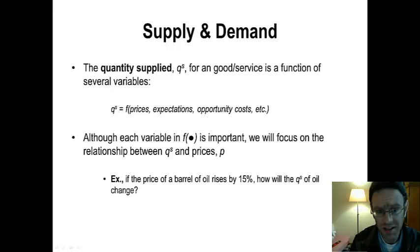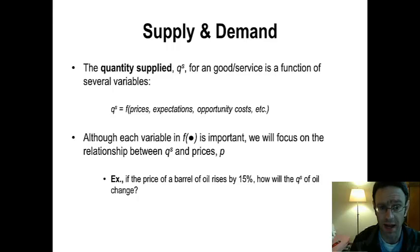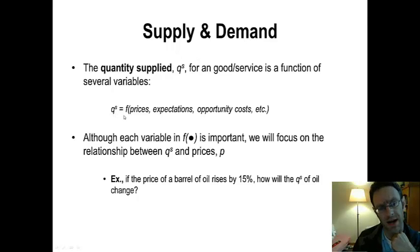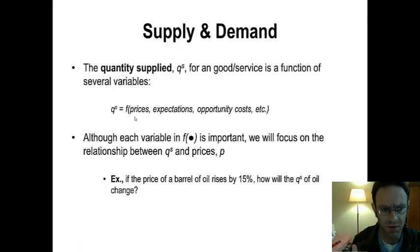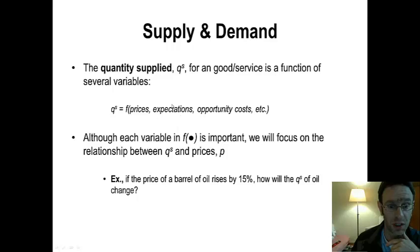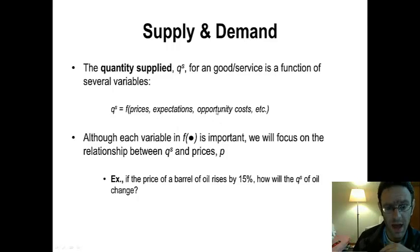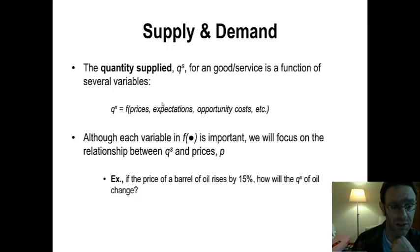To begin our discussion of the supply curve, we start by talking about quantity supplied for a commodity, which we abbreviate in this lecture as QS. The quantity supplied for a commodity can be thought of as being a function of several other variables: the price of the commodity, expectations for the future, cost of production, and lots of other stuff. To begin, we're going to just focus on the relationship between prices and quantity supplied.